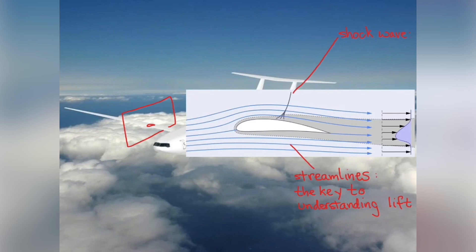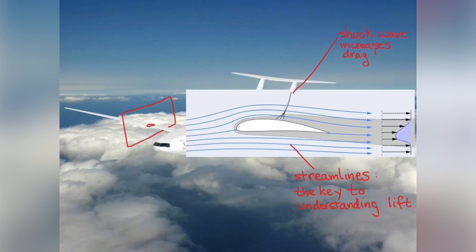Also in this image is a shockwave. A shockwave is the region where the flow rapidly decelerates from supersonic to subsonic speeds. It increases the drag significantly and limits the flight speed that can be achieved in an efficient manner of an airplane.